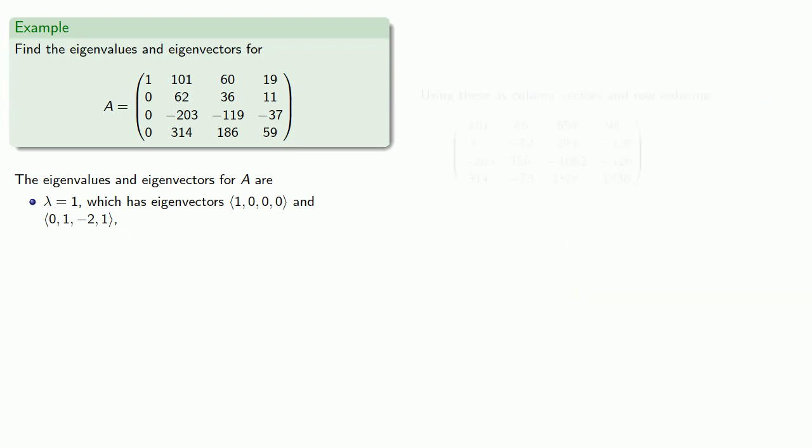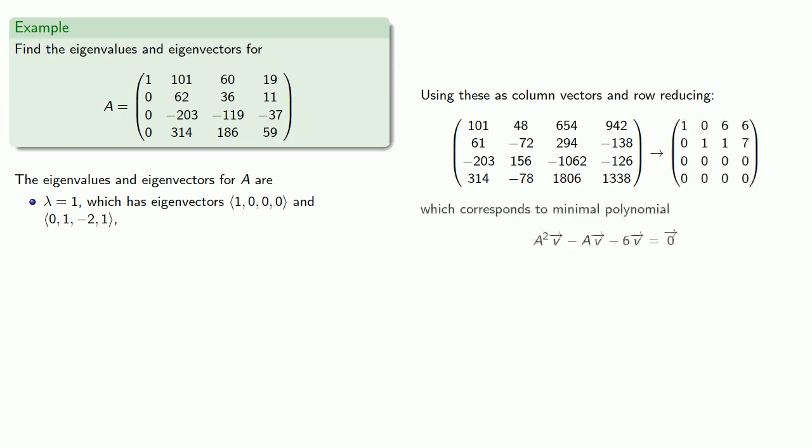And as before, we'll use these as column vectors and row reduce. We find our minimal polynomial, which turns out to be quadratic, and we can factor it. And we find two more eigenvalues, lambda equals 3 and lambda equals negative 2.